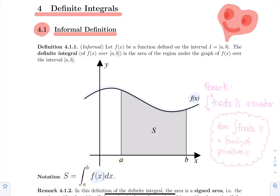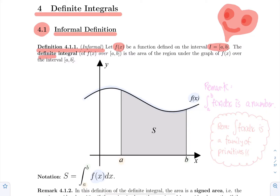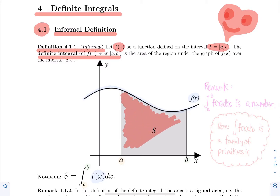The informal definition of the definite integral is the following. We start with a function over an interval ab. So those two things are given to us — the function f and the interval are specified in any definite integral question. So what is the definite integral of f of x over that interval? It's simply the area under the graph of f of x over the interval ab. Here in my picture I have that area shaded in gray, and I call that region S.